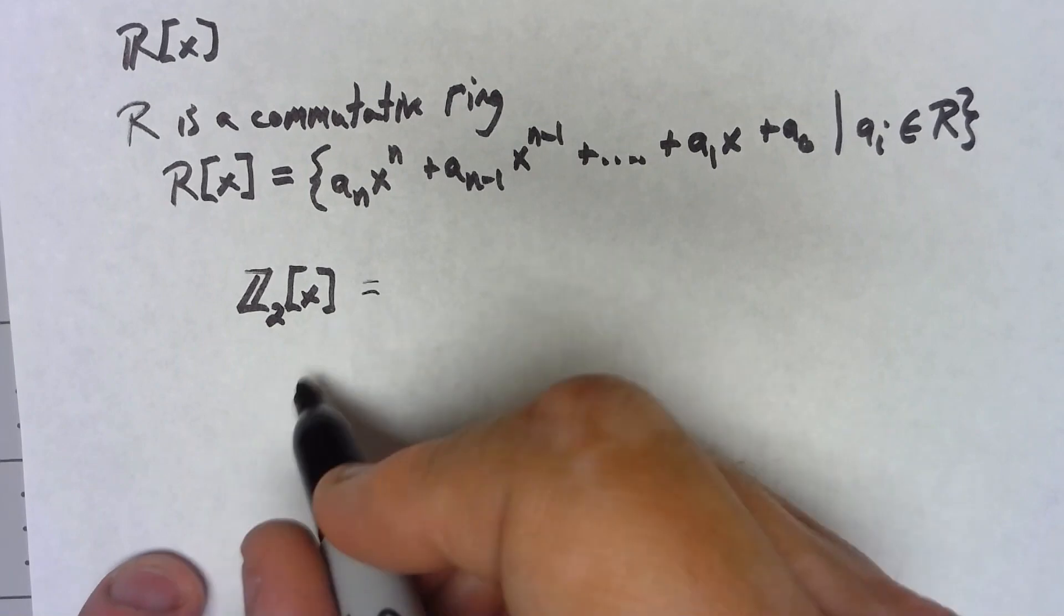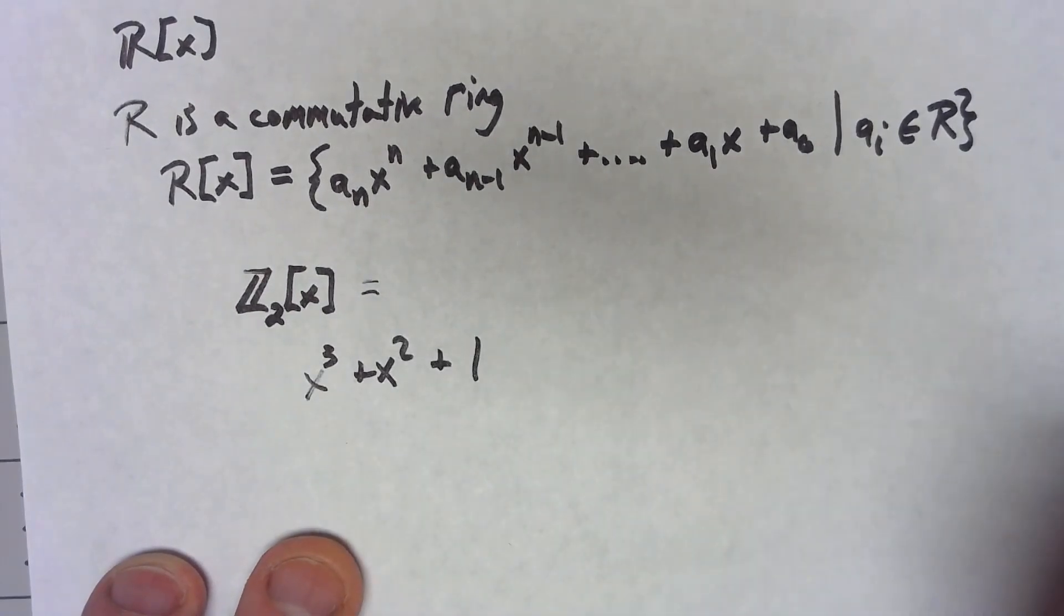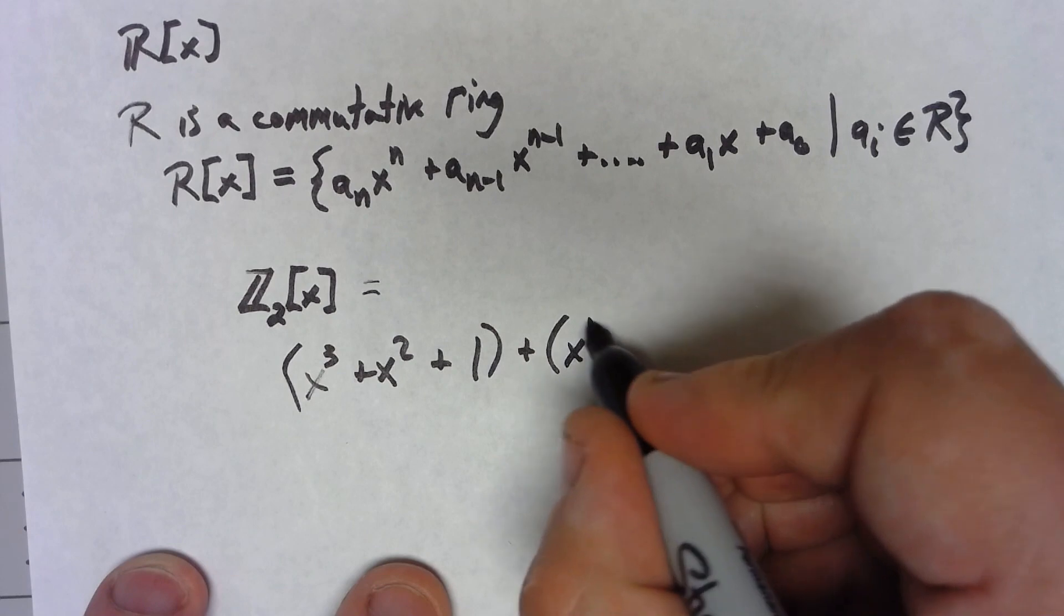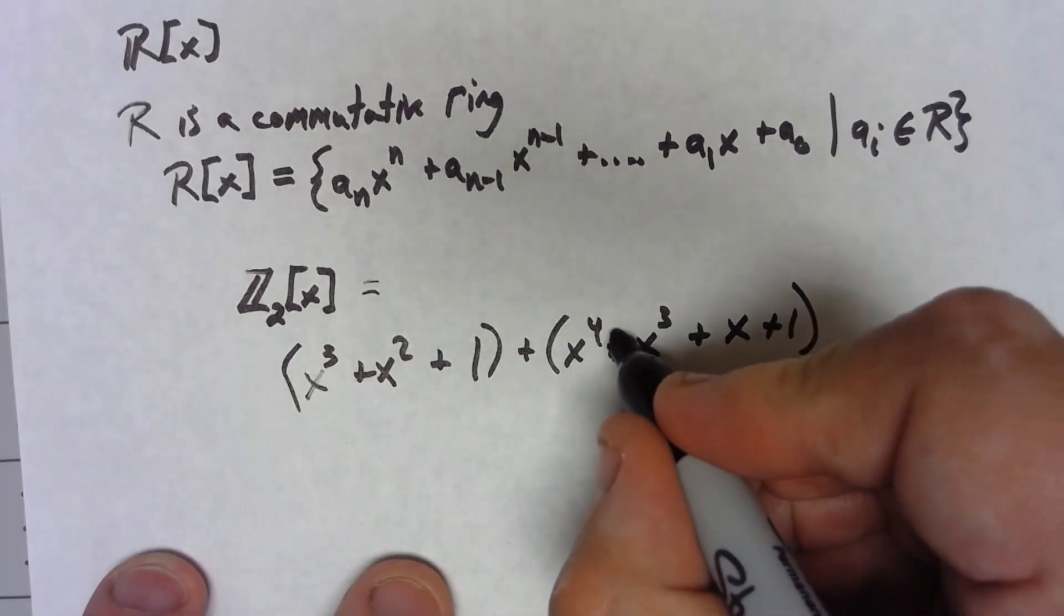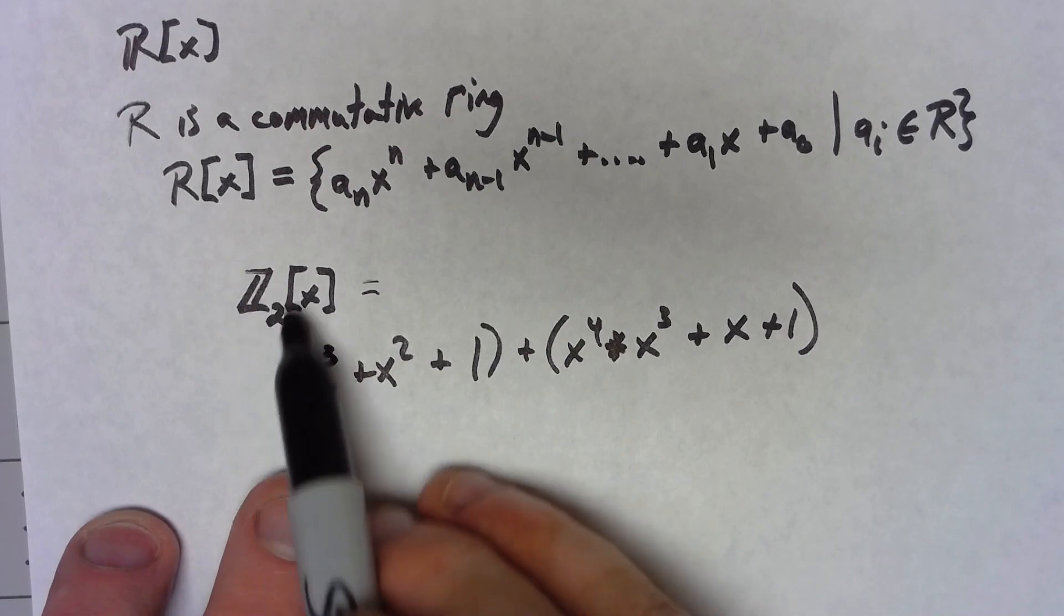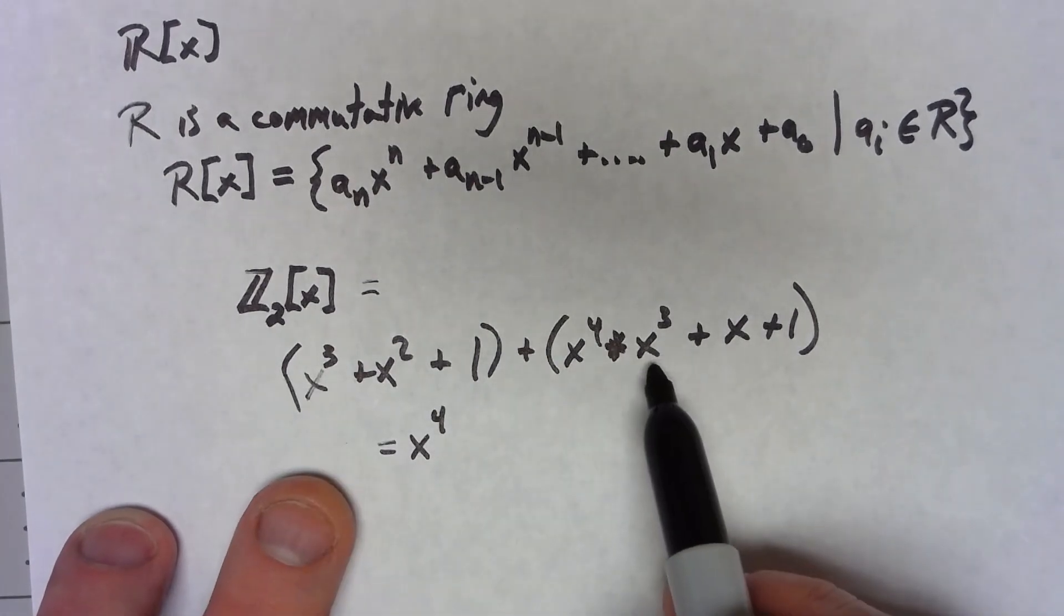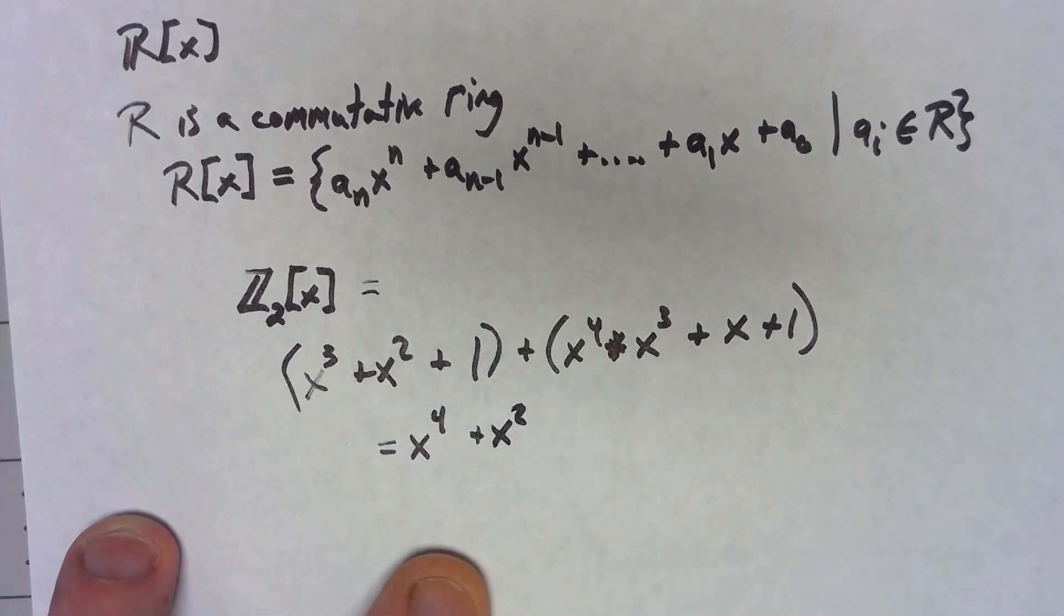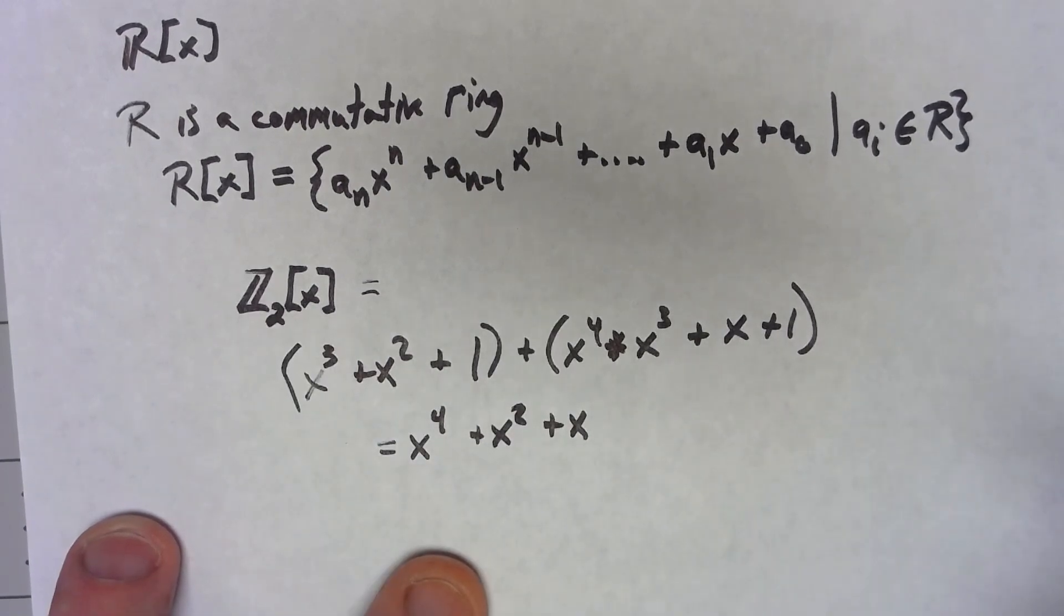So I might have something like an element of that is x cubed plus x squared plus 1, and if I want to take that plus say x to the fourth plus x cubed plus x plus 1, we're going to add just like you would think. However, because we're adding these things, we're adding the coefficients from Z2. So I only have x to the fourth, but when I take 1x cubed plus 1x cubed that's 2x cubed, but mod 2 that's 0, that comes out. We only have a single x squared, we only have a single x. When I do 1 plus 1 I'm adding in Z2, so I get just x.